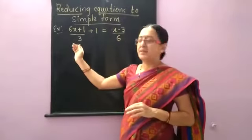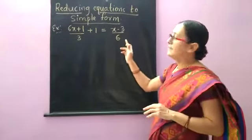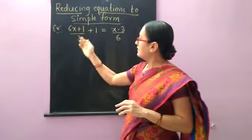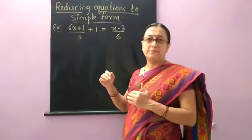Now let us see one example here. 6x plus 1 by 3 plus 1 equal to x minus 3 by 6. Here we are having the equations in the fraction form. So first we have to reduce them to simple form.